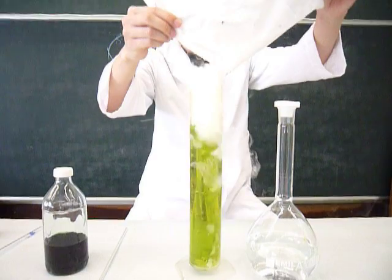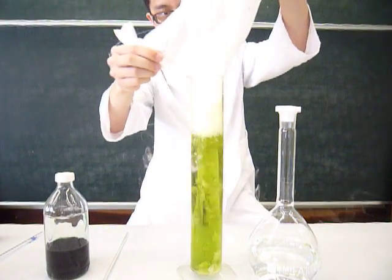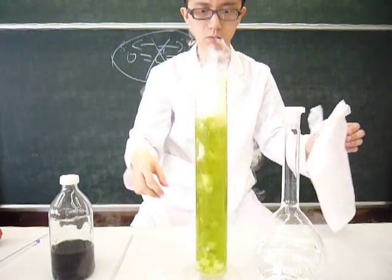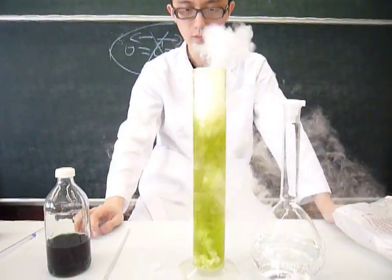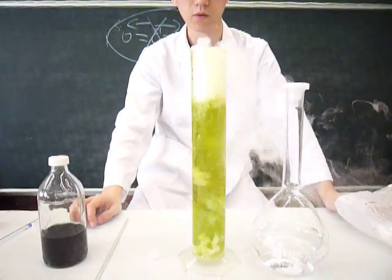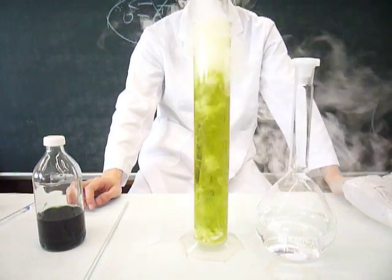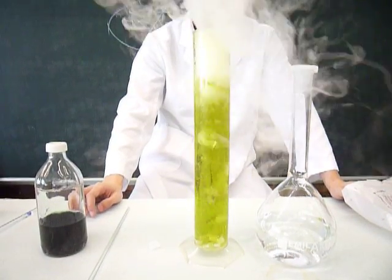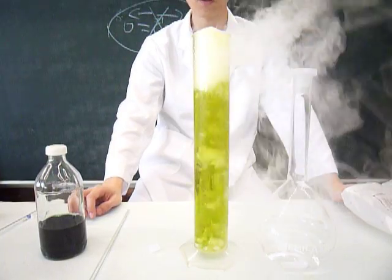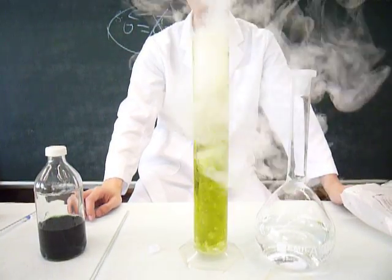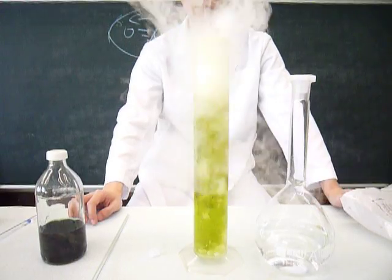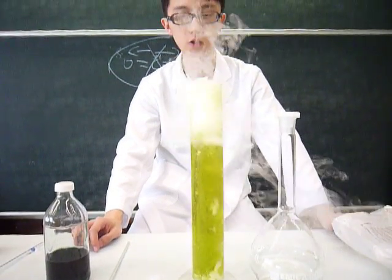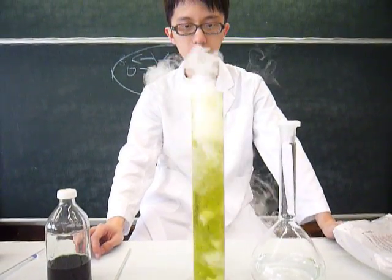You can try to put more dry ice into it and let's see what happens. Now the solution becomes green in color and will not change to red, because carbonic acid H2CO3 is only a weak acid, which gives a pH of about 5.7.